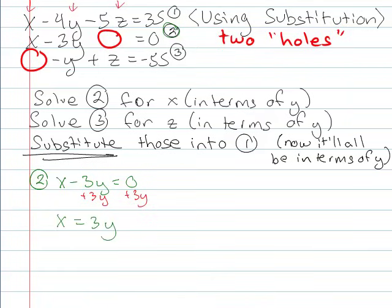Okay now for number three, I've got minus y plus z equals negative 55. This is slightly different than the problem we did in class, because I've written this down incorrectly, but it's correct now. So I'm going to solve for z, so I'm going to add y to both sides, and that's going to end up with z equals y minus 55.